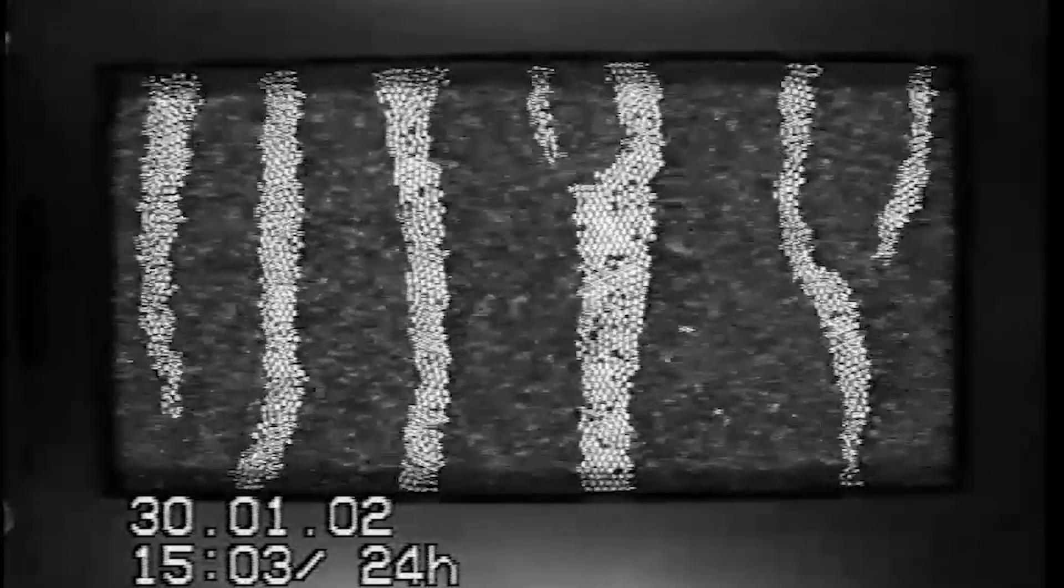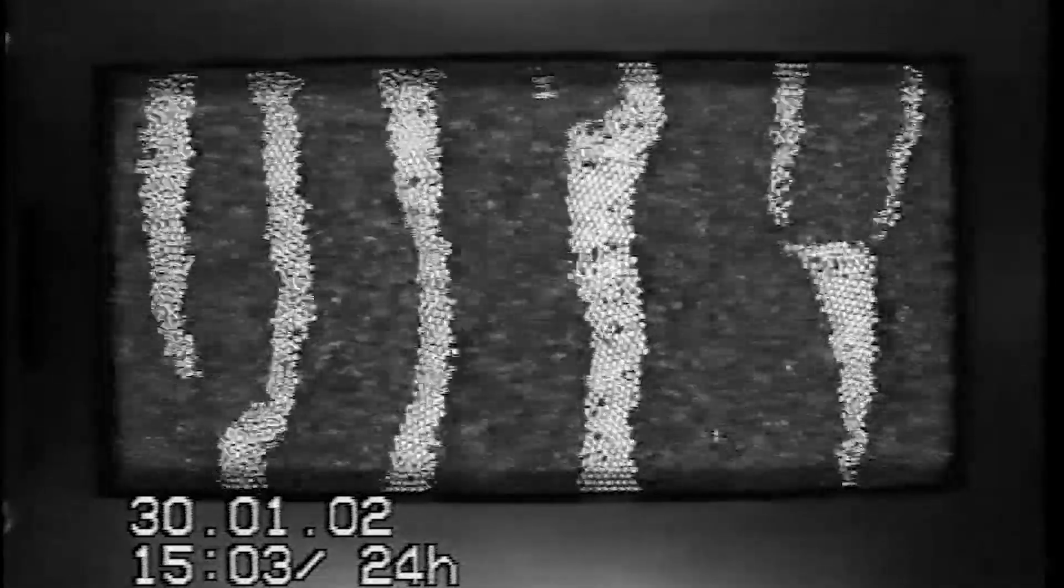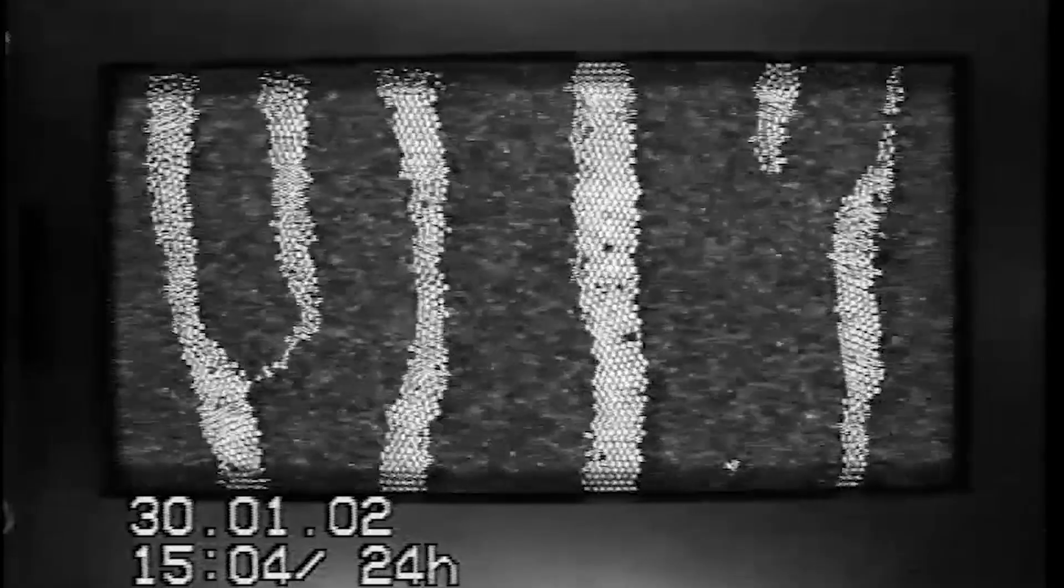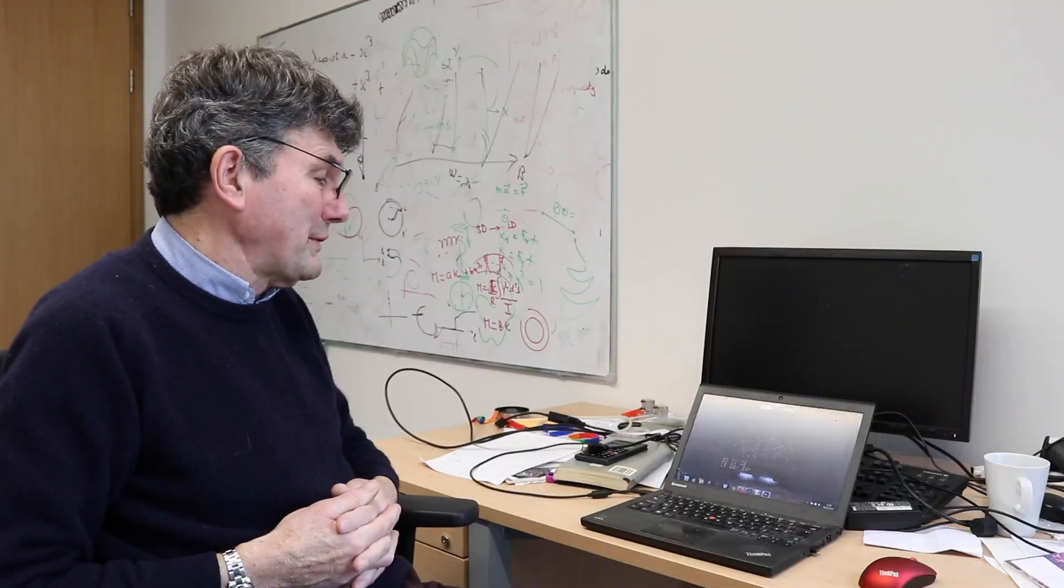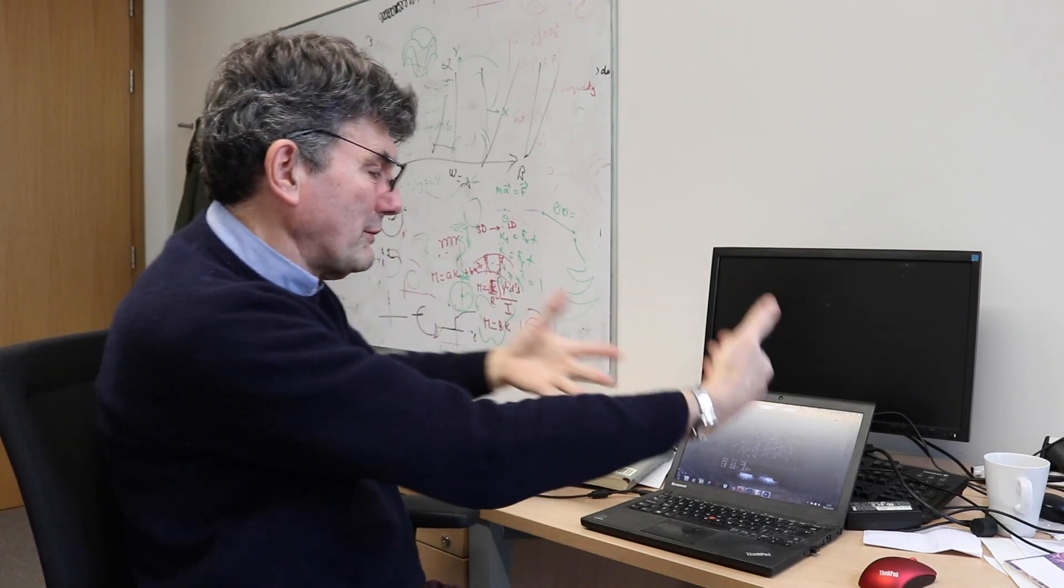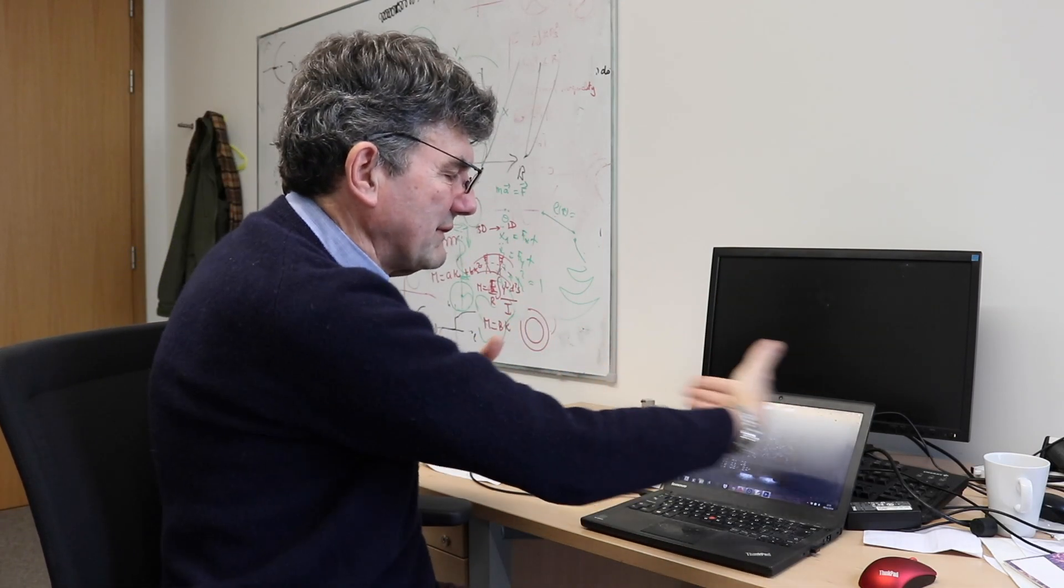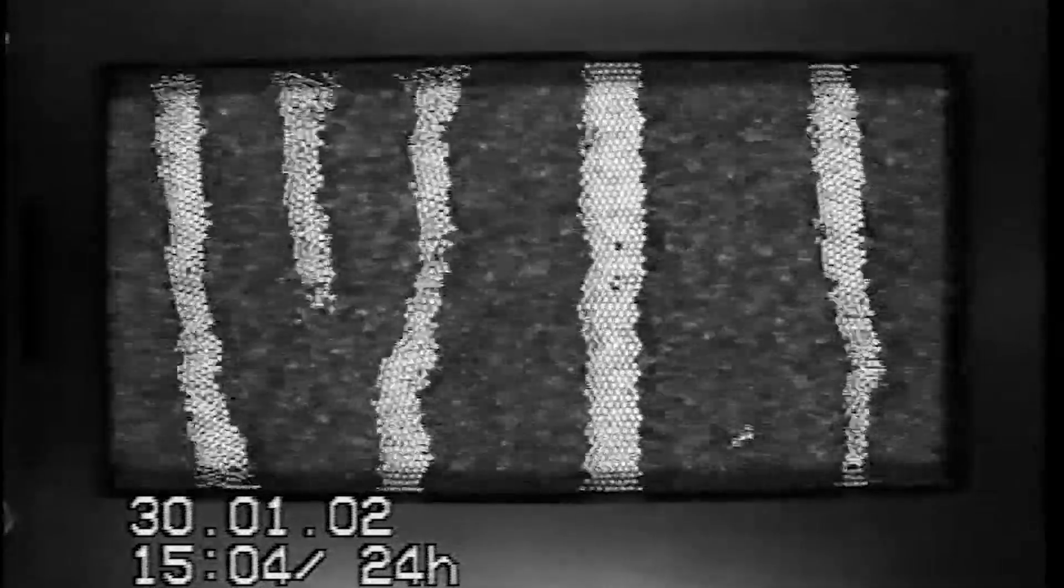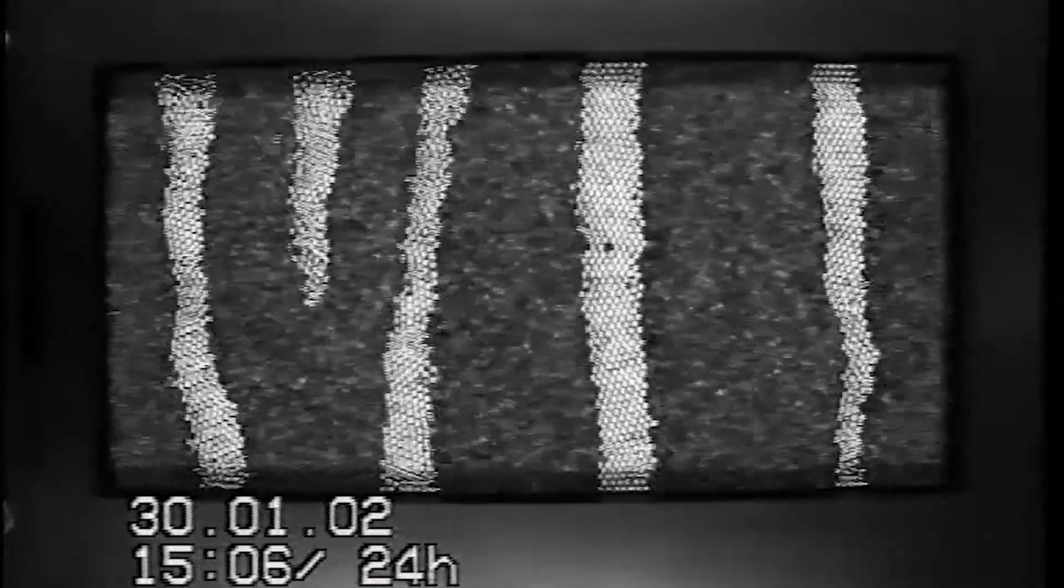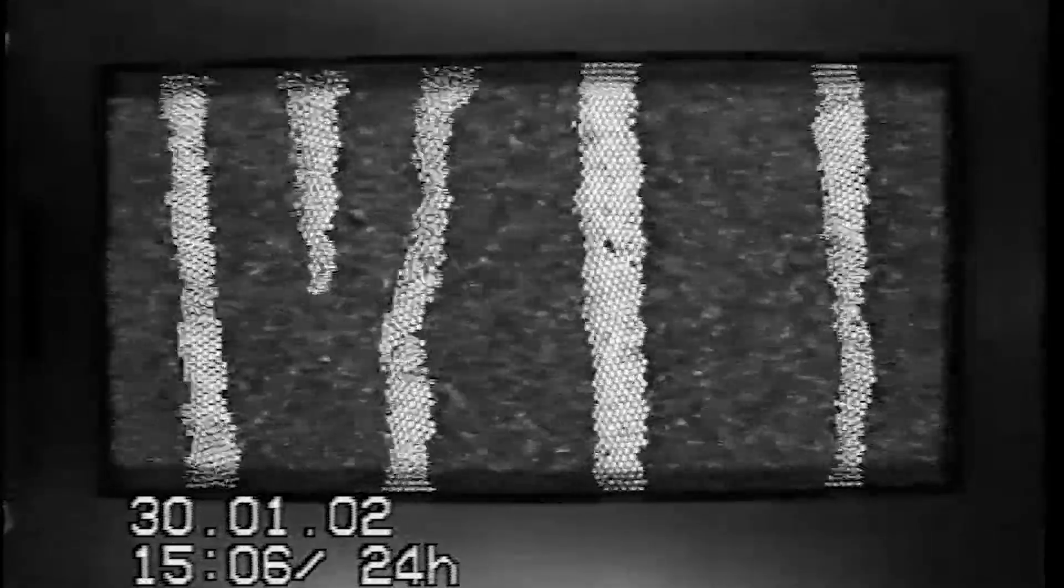We now look at a granular segregation problem. So here we have a tray of material which is a mixture of metal balls and poppy seeds. And you're looking down the top of a tray which is going to oscillate from side to side like this. So when you shake it from side to side, you see that almost immediately it segregates into these patterns. And the stripes that you see are arranged orthogonal to the direction in which we're shaking.